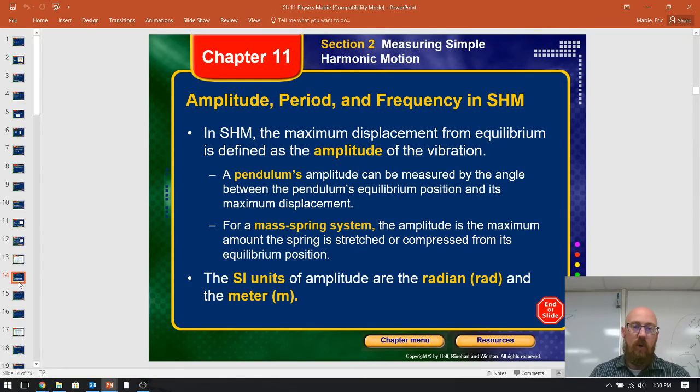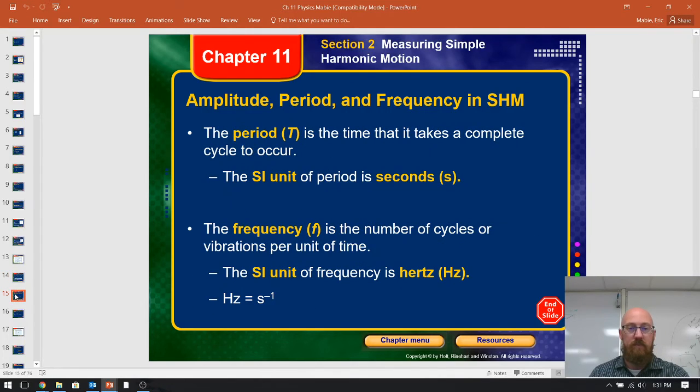Amplitude and frequency. Old terms, hopefully you remember physical science. If not, pendulum's amplitude is basically the displacement from equilibrium. So, the pendulum's amplitude is by the angle. Mass spring system is the amount it's stretched, that distance. So, SI units are radians. Yes, we've gone to the dark side. The radian. Anyway. Also in meters, for displacement. So, period, time. You've seen this equation before. Or this abbreviation. Period is T. Time it takes from one cycle.